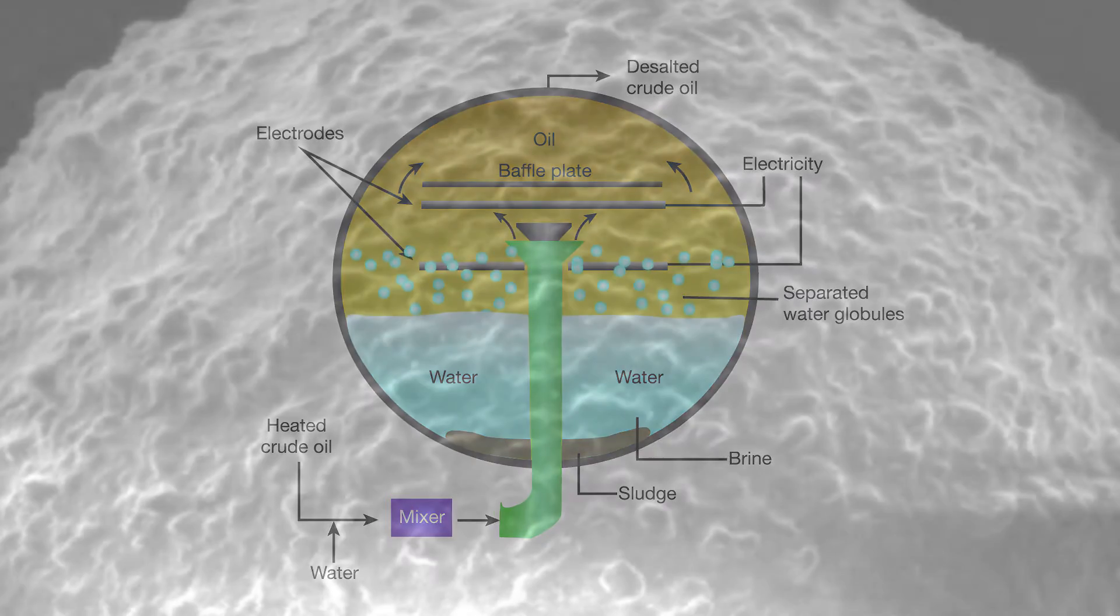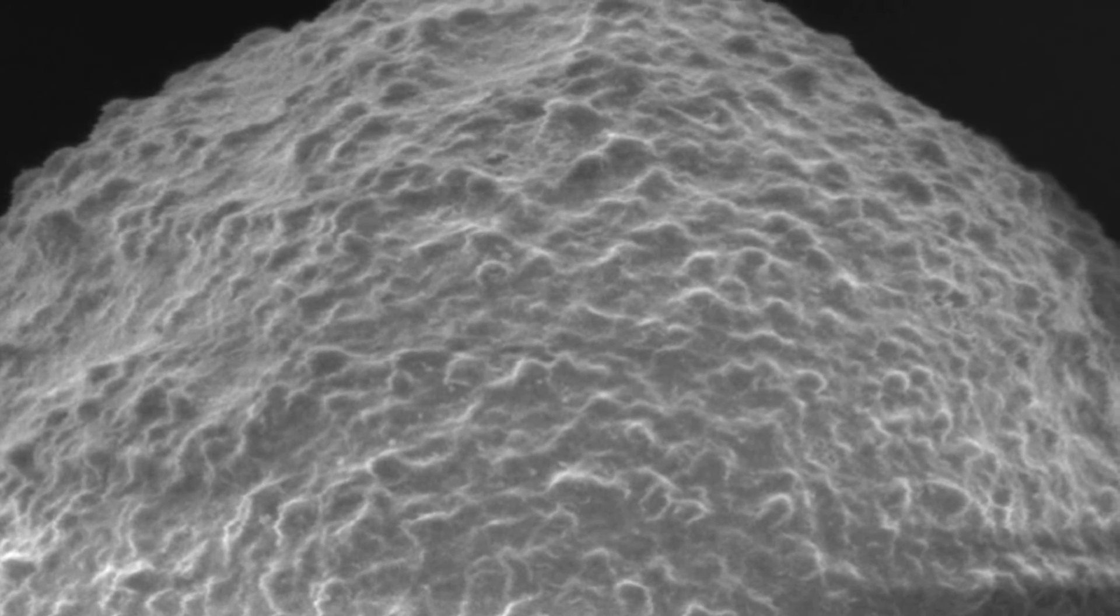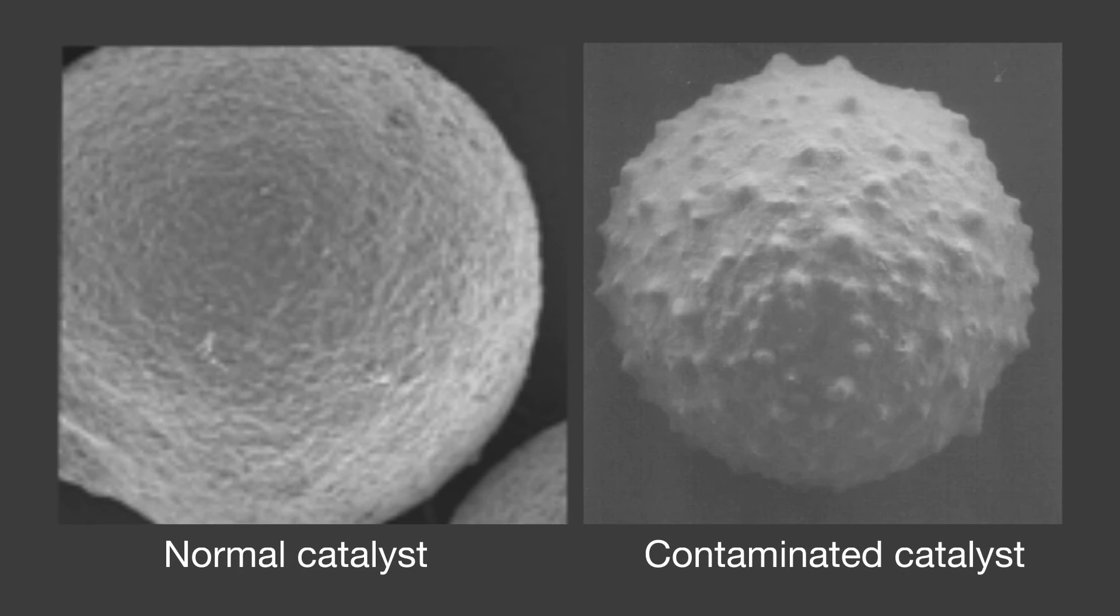After the FCC process has begun, operators can diagnose symptoms of iron poisoning by examining samples of equilibrium catalyst particles taken from the operating unit under an electron microscope. As observed at the PES refinery, one of the tell-tale signs of iron poisoning is the formation of nodules on the surfaces of catalyst particles.